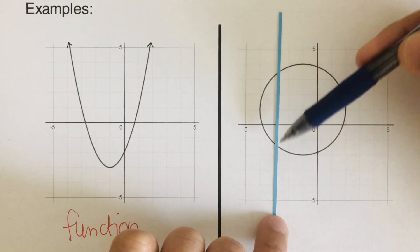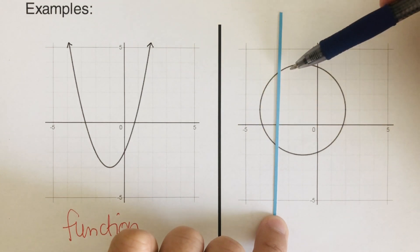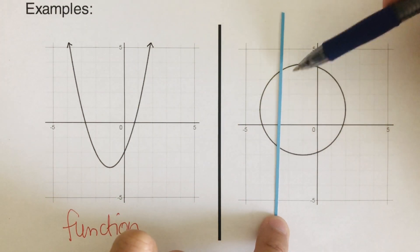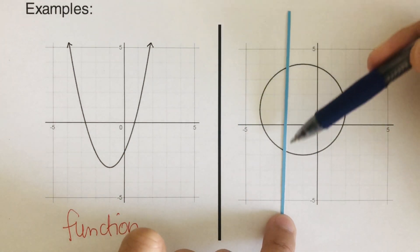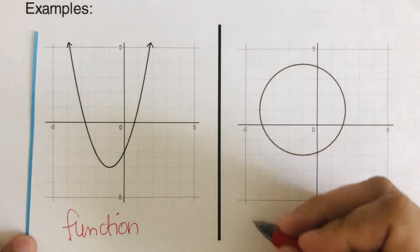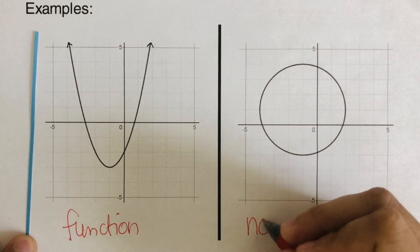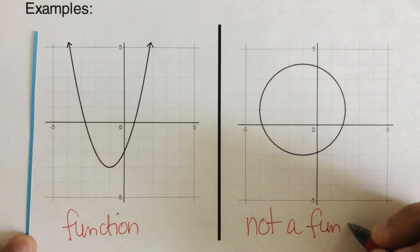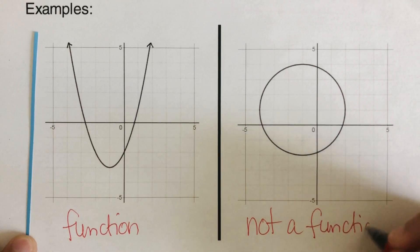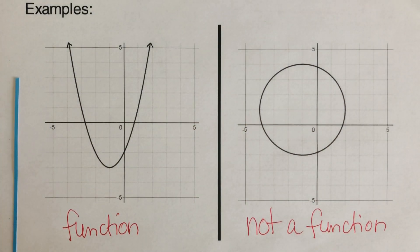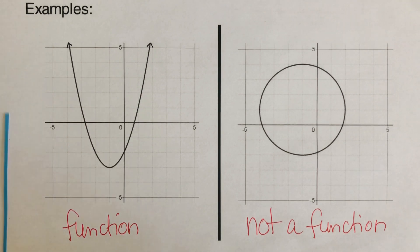So these are the two points where the graph and the vertical line are touching each other. That means this is not a function, because the condition for a graph to be a function is that it should touch the vertical line at one point only.